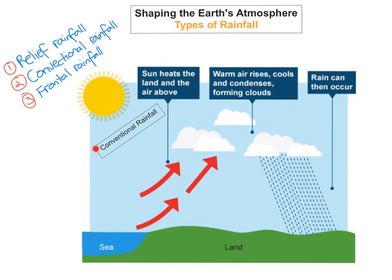The second type of rainfall is convection rainfall. Convection rainfall usually happens in very warm countries, because it needs the sun's rays to heat the Earth's surface. In really hot countries, you will get strong sunshine which will heat the Earth's surface, and that will cause the warm air to rise up. As the warm air rises up, it will cool, condense, and the water vapour will turn into water droplets. These water droplets will collate together to form clouds, and then you'll get a period of very heavy rainfall. Sometimes this can cause thunderstorms, if the air rises very quickly, forming huge clouds.